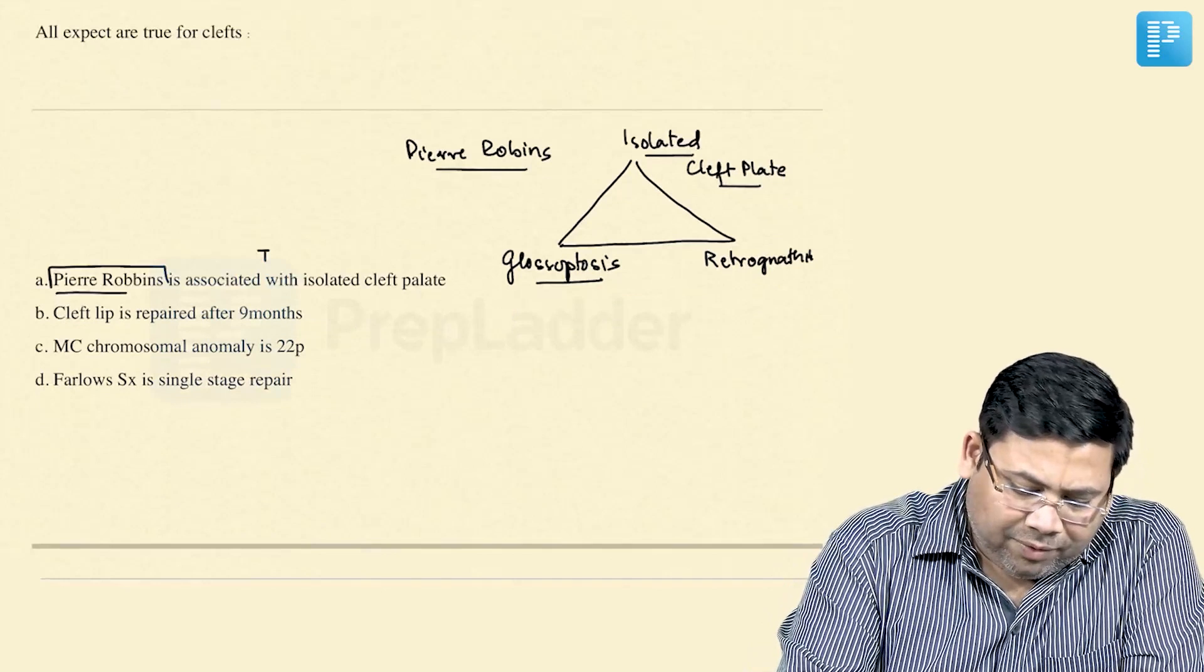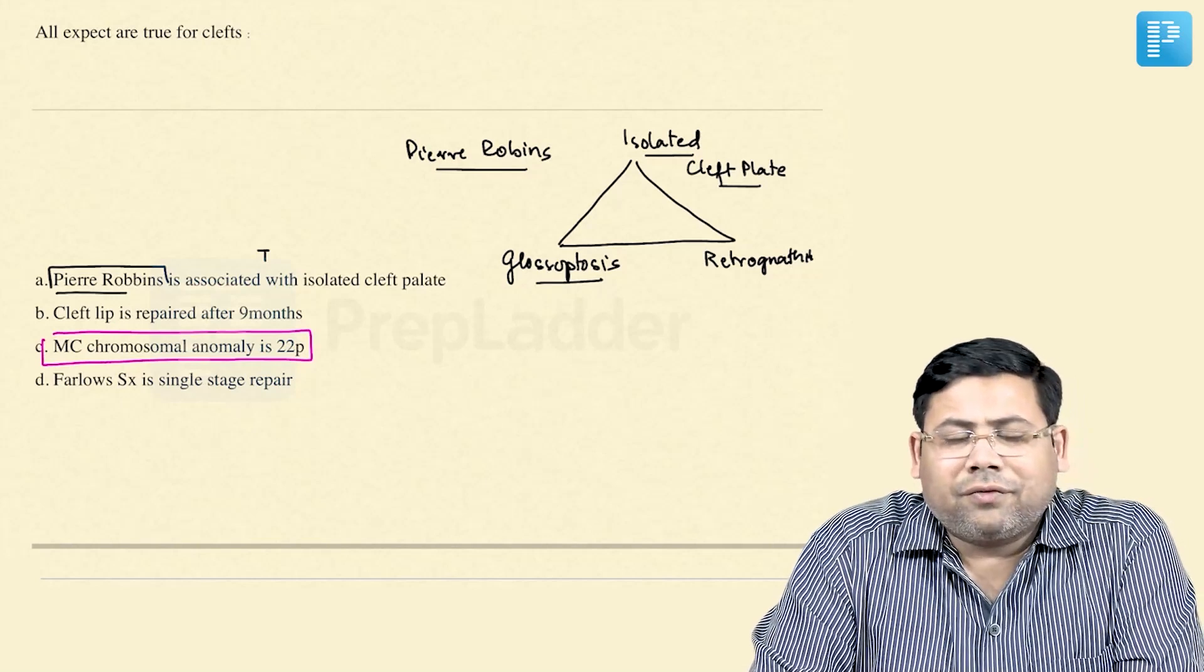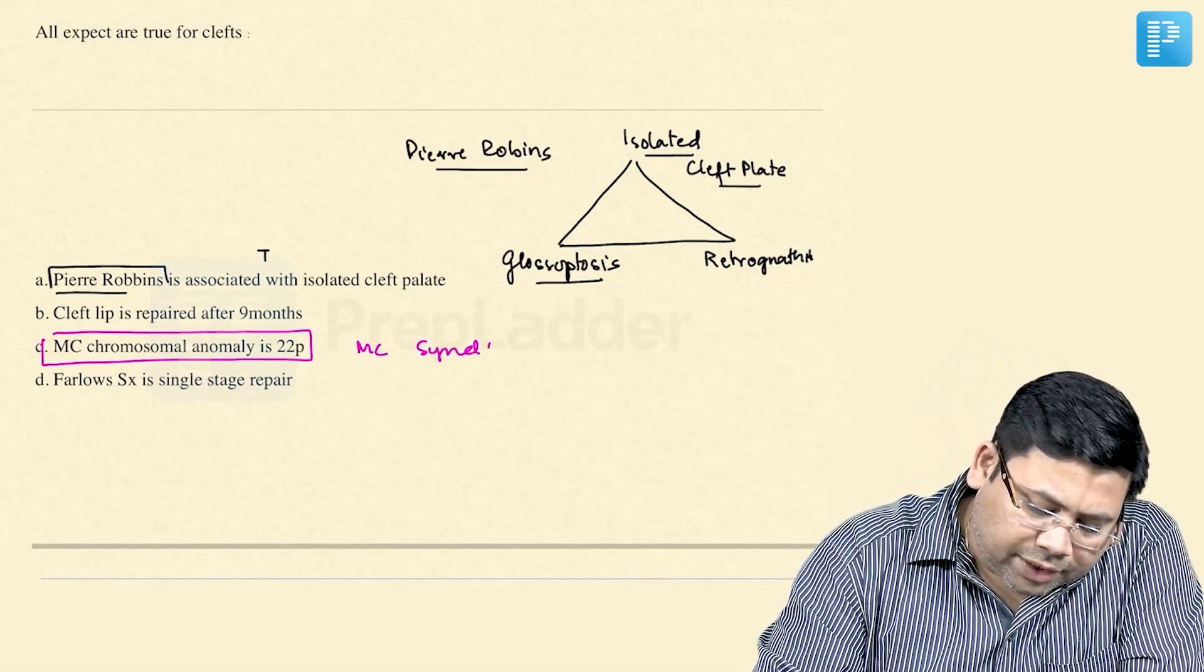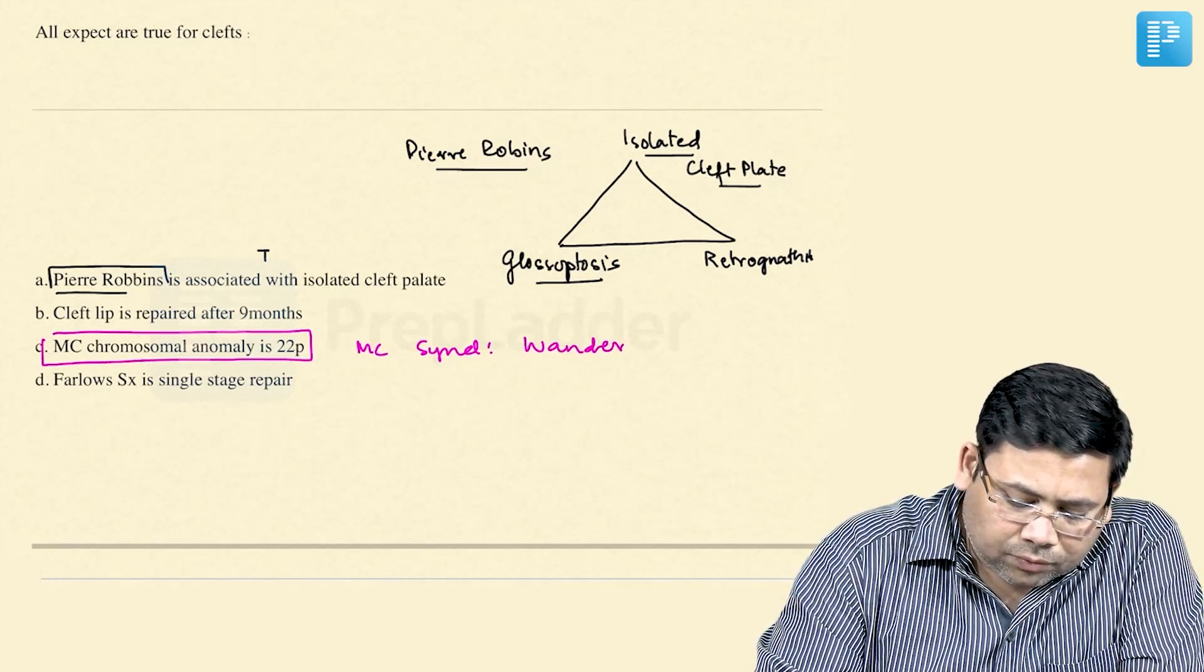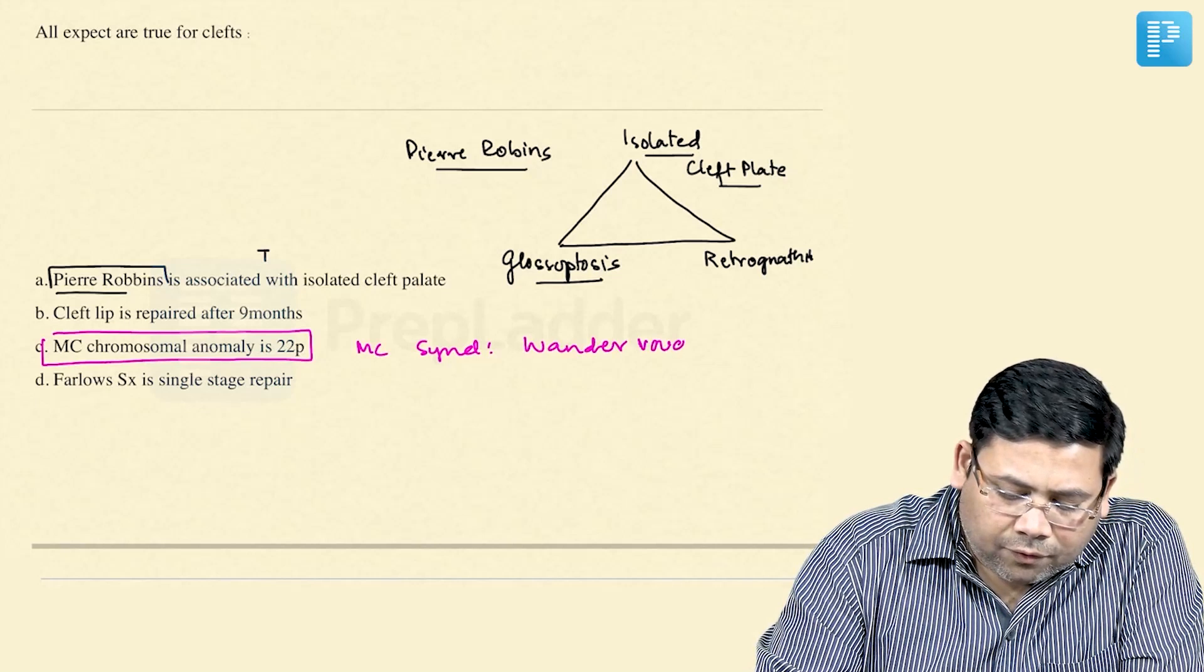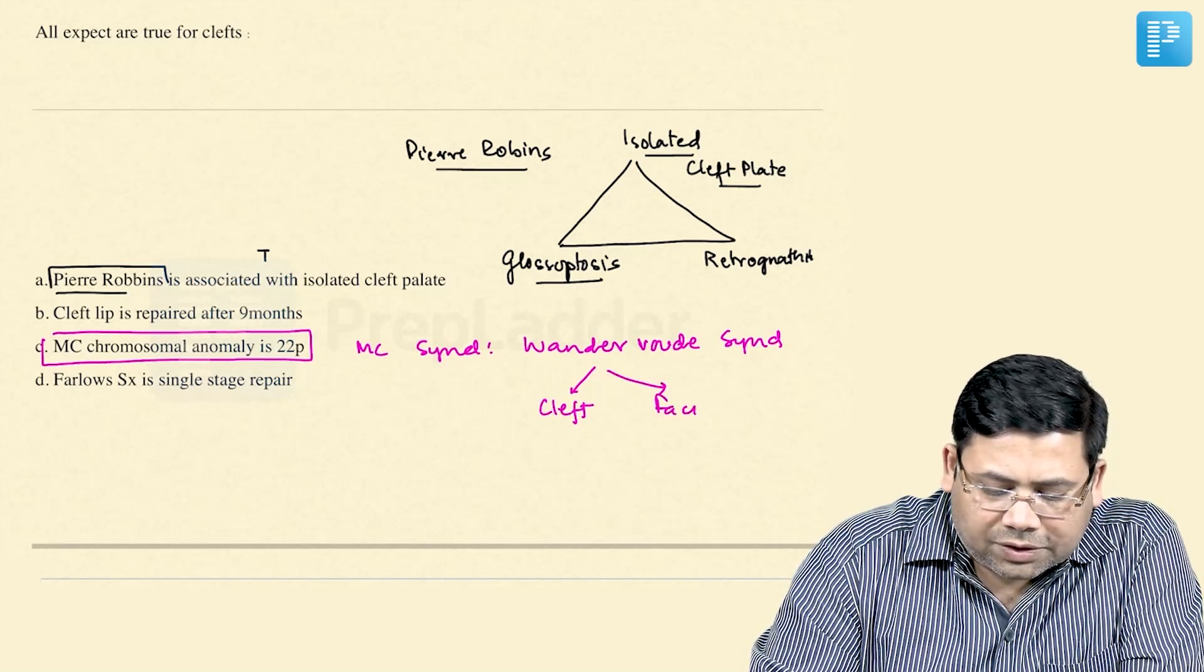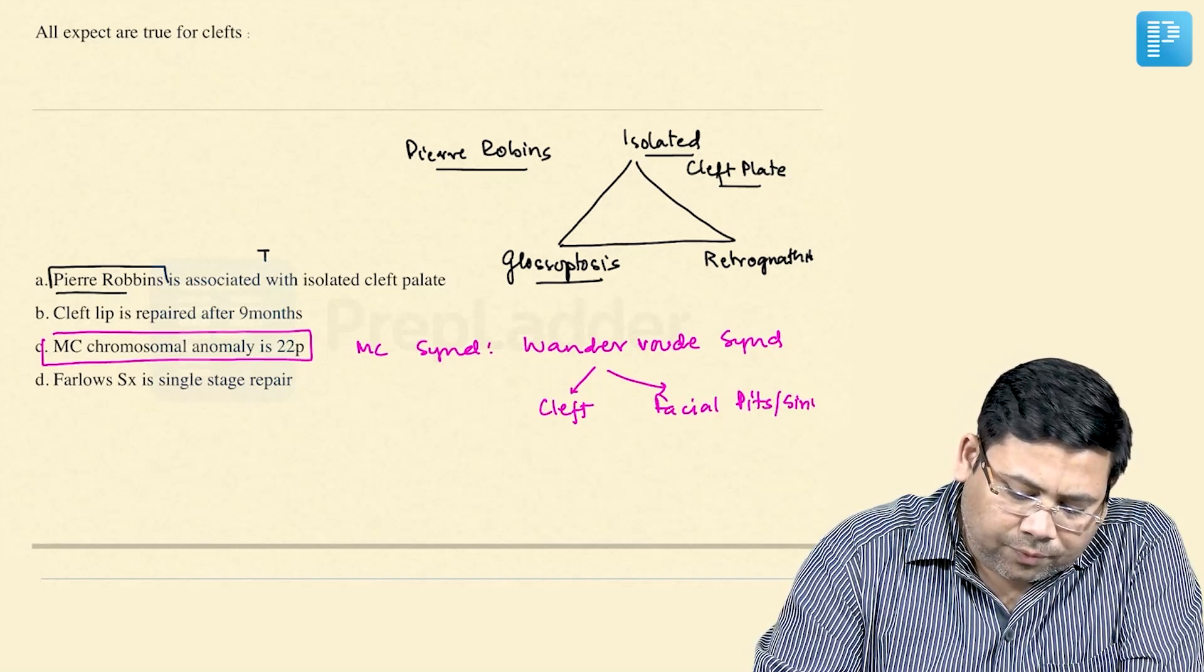The second very important point is the most common chromosomal anomaly that is associated with this short R-22P mutation. The most common syndrome which is associated is Van der Wood syndrome. Here you get to see clefts and along with that facial pits or sinus. There are lot of syndromes.